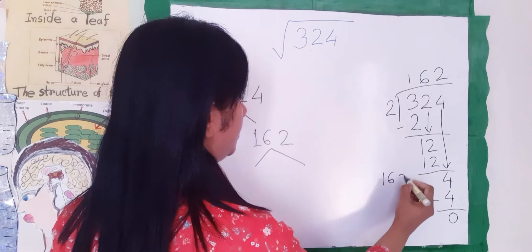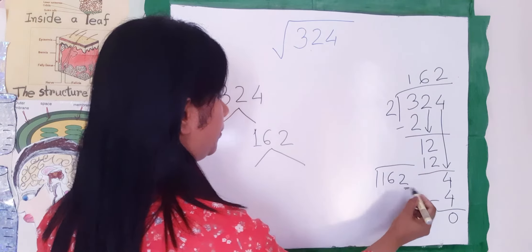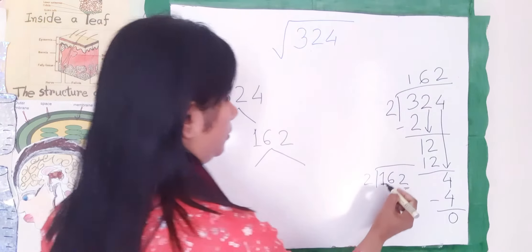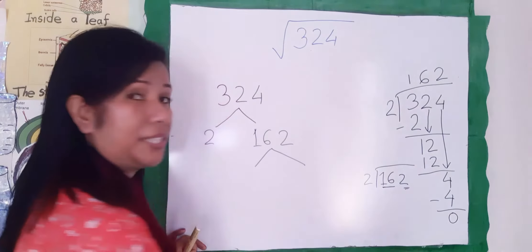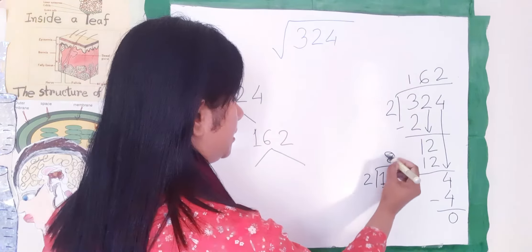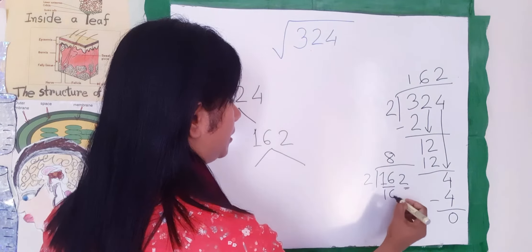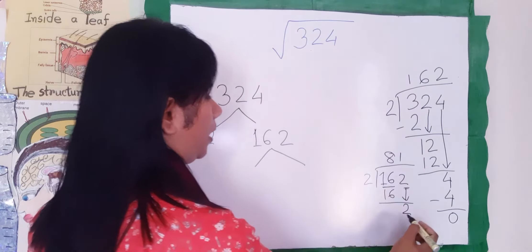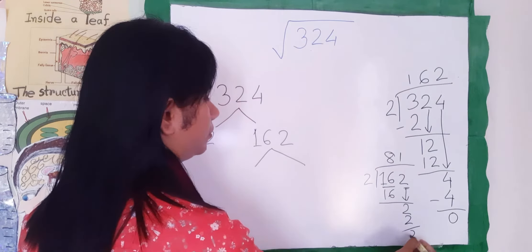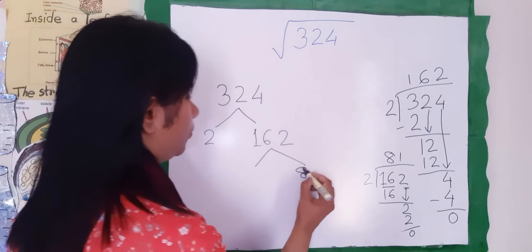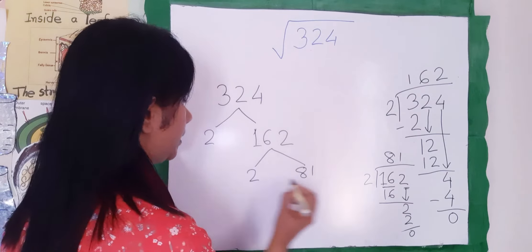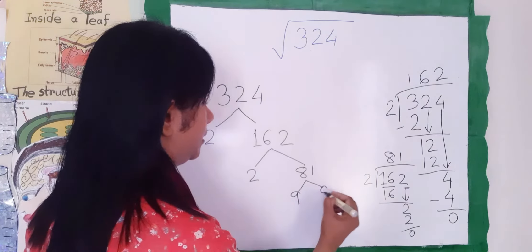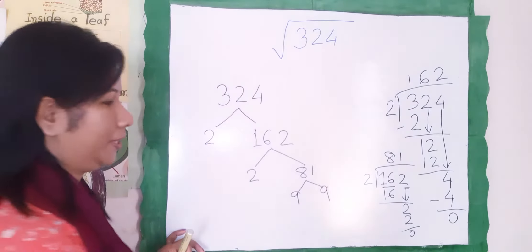162 is two times 324. Now we'll subtract and multiply again. We'll take 162 because it's a prime number — we can multiply by two. So this number is small; we'll take 16. Eight is two times 16. Now we have two, bring down one. Two is one times two, 81. Again we'll do it: nine is nine times 81.